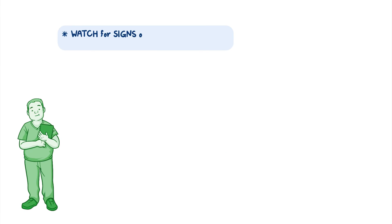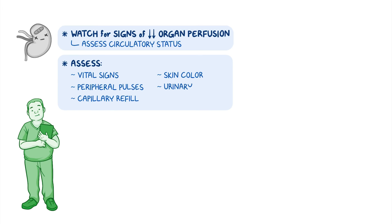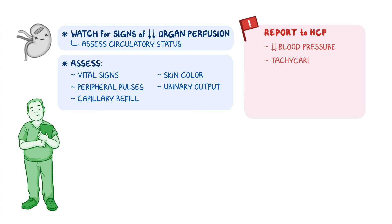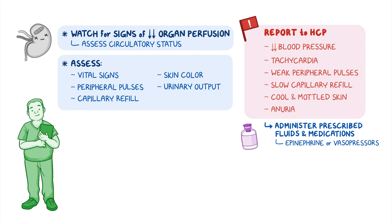Watch for signs of decreased organ perfusion by assessing your client's circulatory status. Assess their vital signs, peripheral pulses, capillary refill, skin color, and urinary output. Immediately report if your client has decreased blood pressure, tachycardia, weak peripheral pulses, slow capillary refill, cool and mottled skin, decreased urine output, or anuria. Administer the prescribed IV fluids and medications, including an infusion of epinephrine or vasopressors as ordered. Raise your client's legs and feet to assist in promoting adequate circulation to the central part of the body.